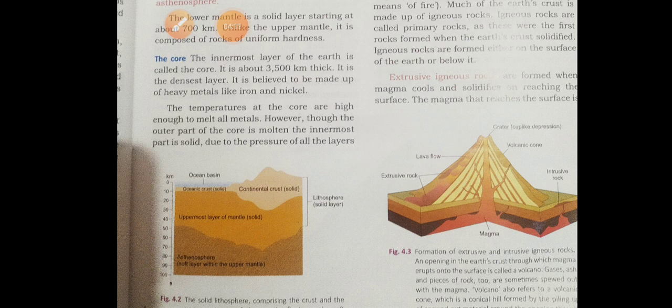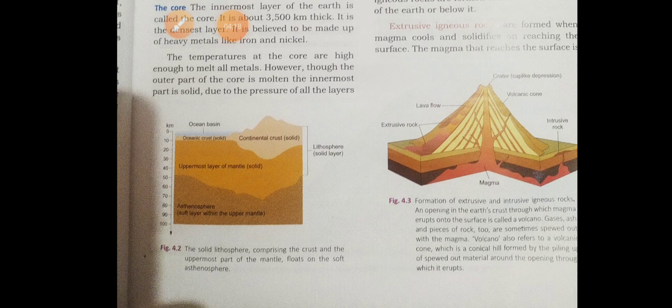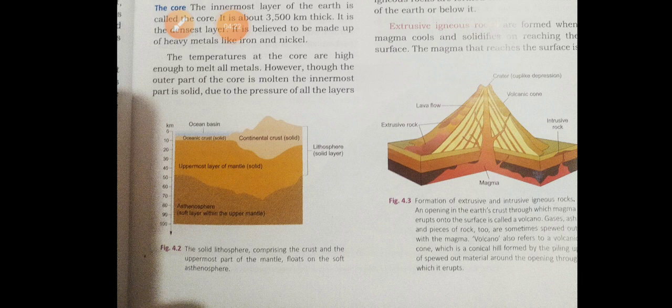Extrusive igneous rocks are formed when magma, what is magma? Magma means it is a molten form of rocks. When it comes out and in the top of the earth's surface, it is called extrusive rocks. And we can call them lava also. At the time of volcanic eruption, you can see this lava.